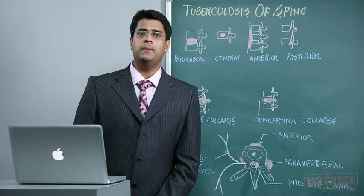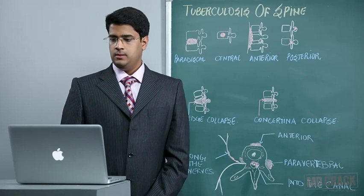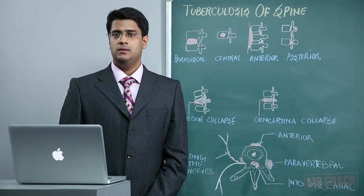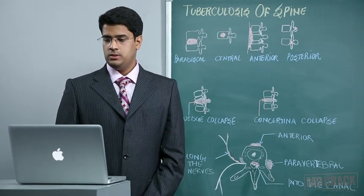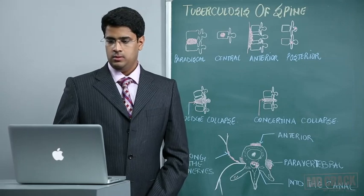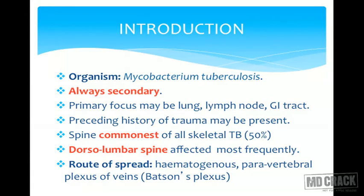Now we come to another important part of infections: tuberculosis affecting the spine. The spine is the most common bone affected by tuberculosis, also known as Pott's spine, named after Percival Pott. The causative organism is Mycobacterium tuberculosis. It is always secondary; the primary focus may be the lung, lymph node, or gastrointestinal tract. There could be a preceding history of trauma.